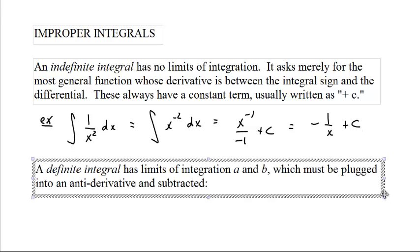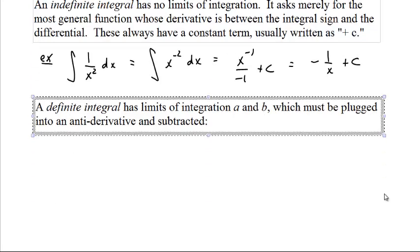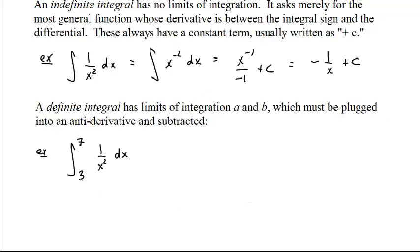A definite integral has limits of integration, a and b, which must be plugged into an antiderivative and subtracted. For example, the integral from 3 to 7 of 1 over x squared. Now, we know that the general function is negative 1 over x. To evaluate this, we take the negative 1 over x, we plug in 7, we plug in 3, and subtract.